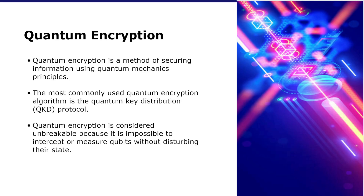Quantum encryption is a method of securing information using quantum mechanic principles. It is based on fundamental principles such as the Heisenberg uncertainty principle and the no-cloning theorem. Quantum encryption uses quantum bits, or qubits, to create a secure key that can't be intercepted or replicated. The most used quantum encryption algorithm is the Quantum Key Distribution protocol. QKD works by sending qubits over a communication channel; the sender and receiver measure the qubits and establish a shared key, which is then used to encrypt the message. Quantum encryption is considered unbreakable because it's impossible to intercept or measure qubits without disturbing their state — any such attempt would be detected and the key would be discarded, making the communication completely secure.